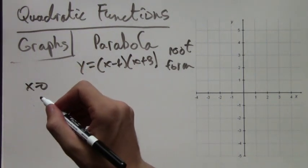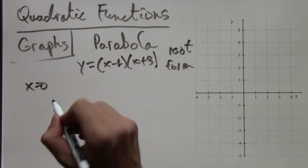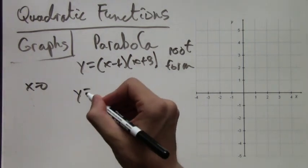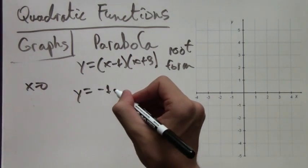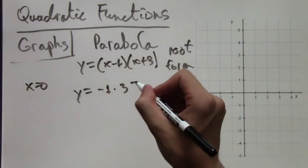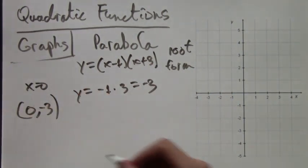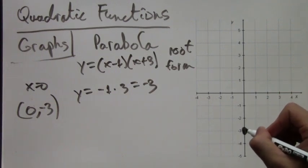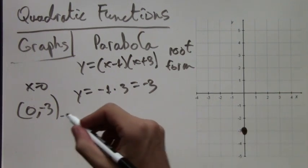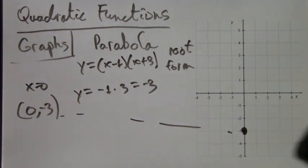Then we're going to find the vertex. If x equals 0, then y equals negative 1 times positive 3, because 0 minus 1 is negative 1 and 0 plus 3 is 3. So we get y equals negative 3. Here I've graphed the point (0, -3).